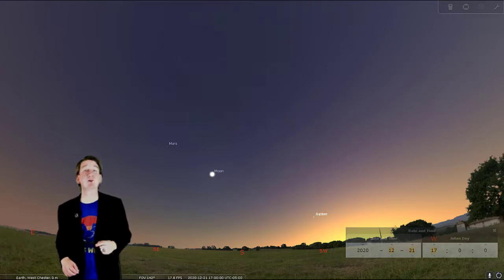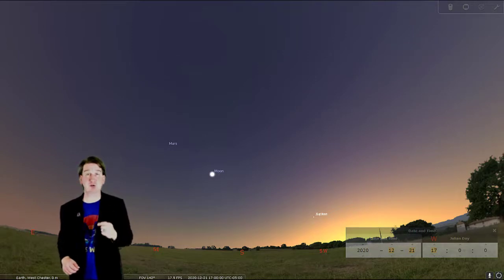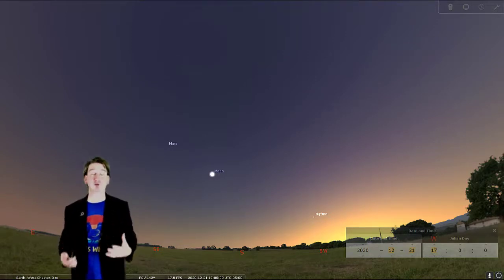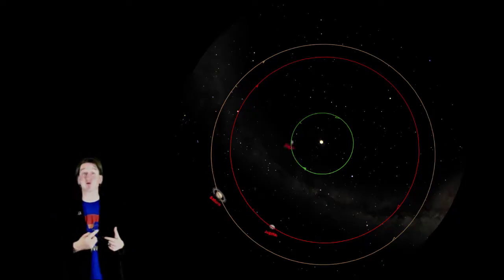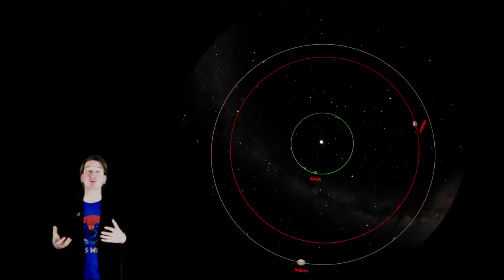Now remember, when dealing with the sky, looks can often be deceiving. Although Jupiter and Saturn will appear very close together, they are still separated in space by almost 400 million miles. They only appear so close together in our nighttime sky, because as the planets revolve around the sun, they do so in different amounts of time.